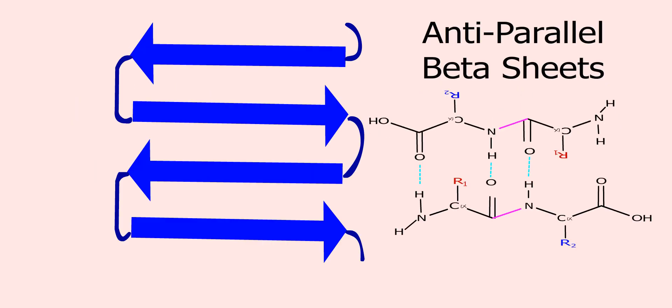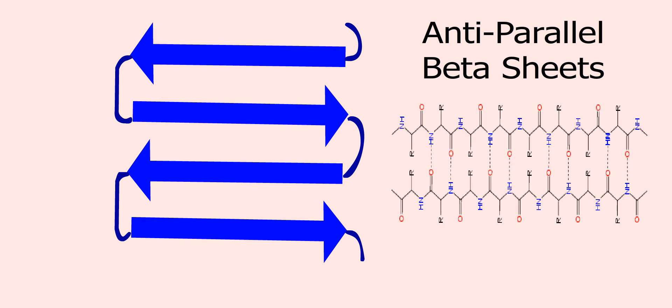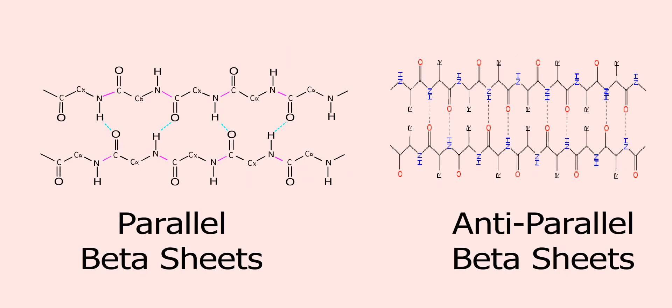In anti-parallel beta sheets, the polypeptide chains are oriented in opposite directions. In this beta sheet formation, the hydrogen bonds are stronger due to more direct alignment between amino and carbonyl groups. As a result, anti-parallel beta sheets are more stable.